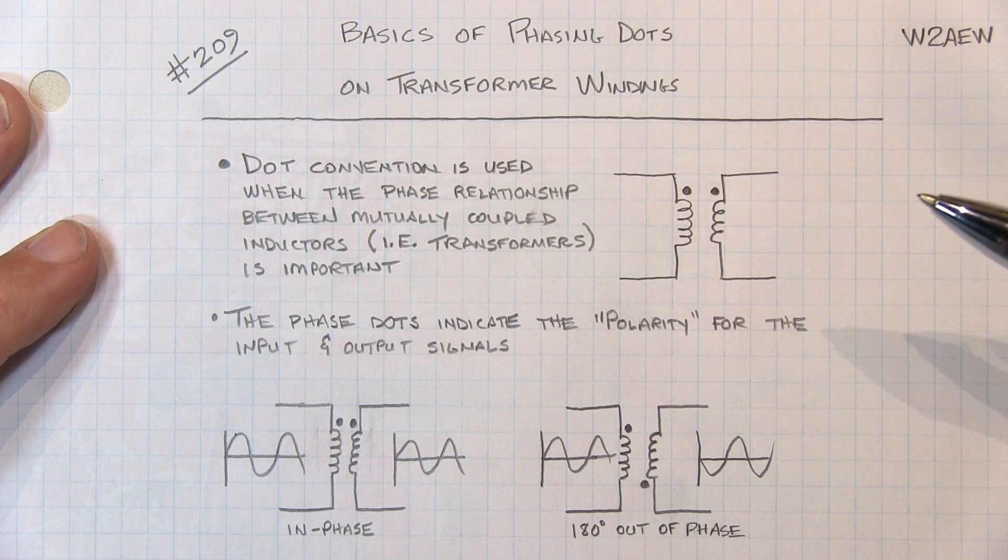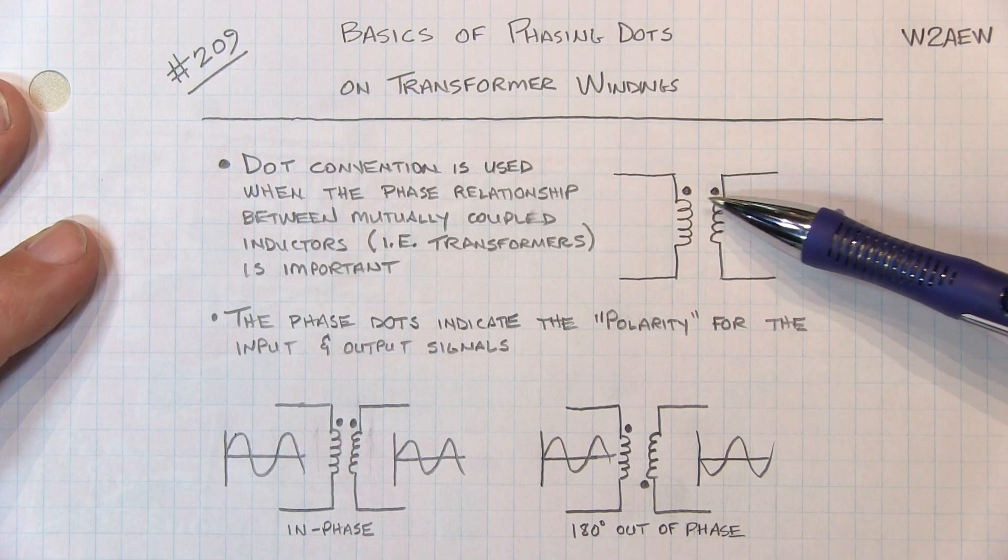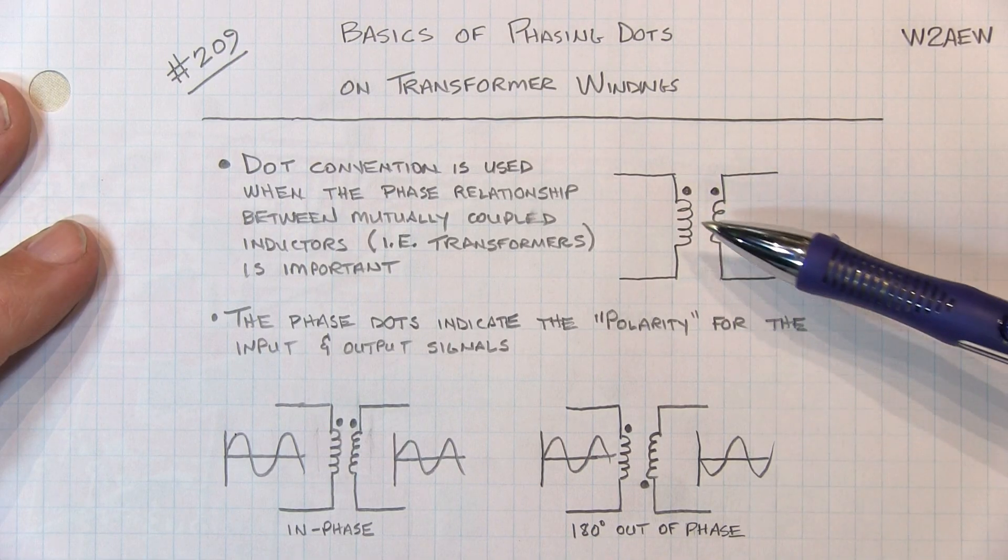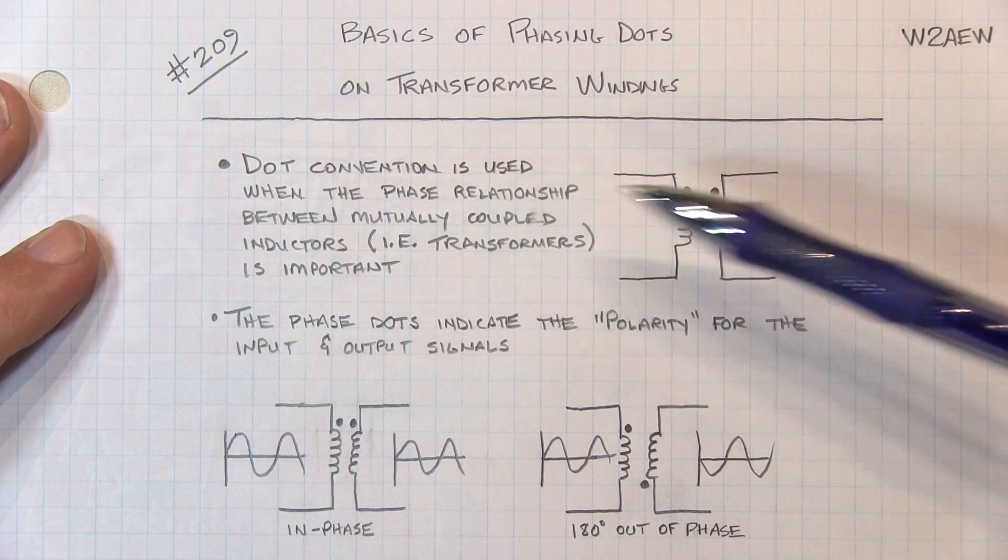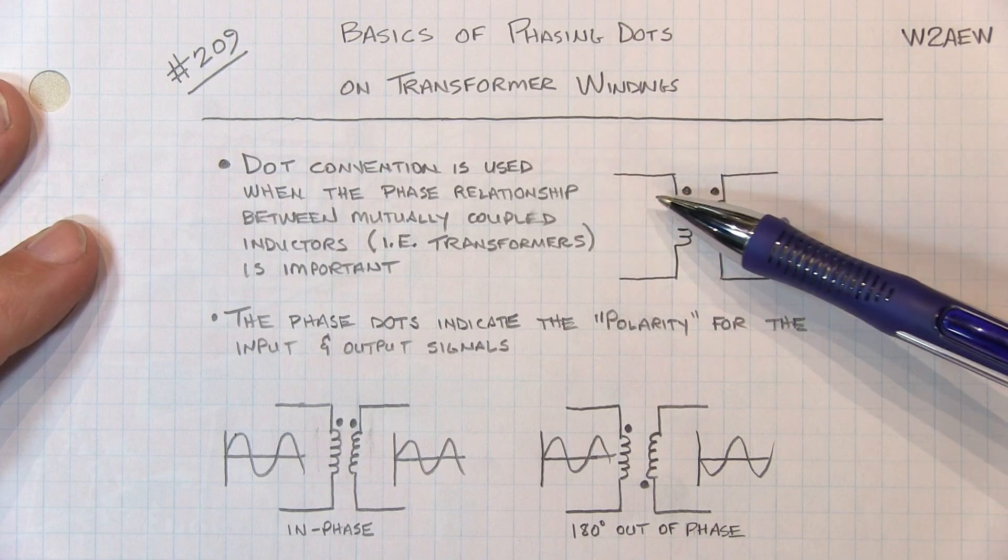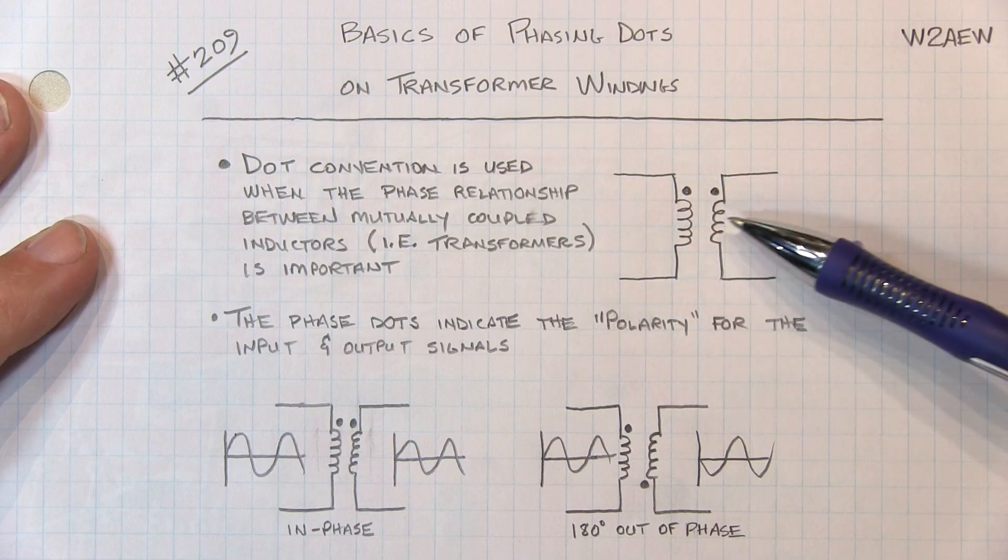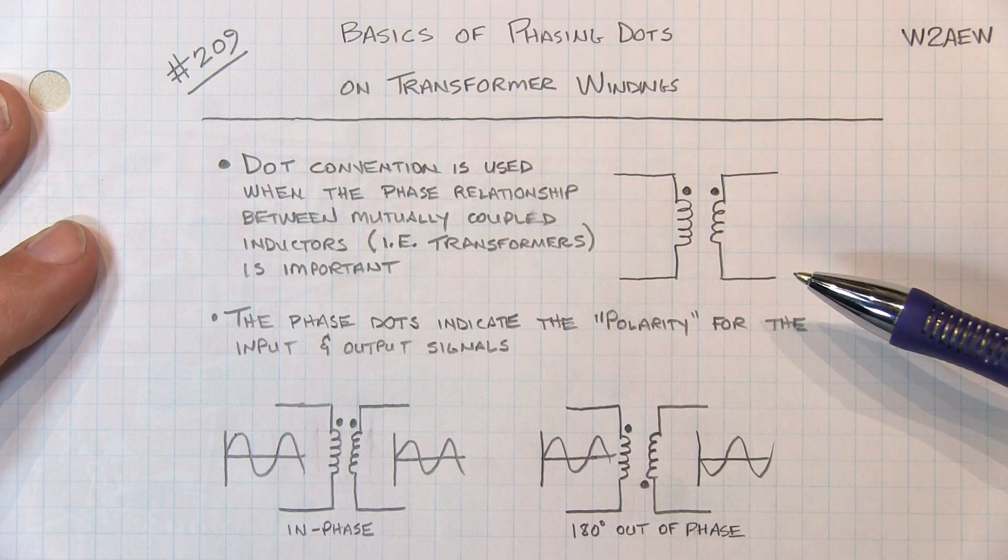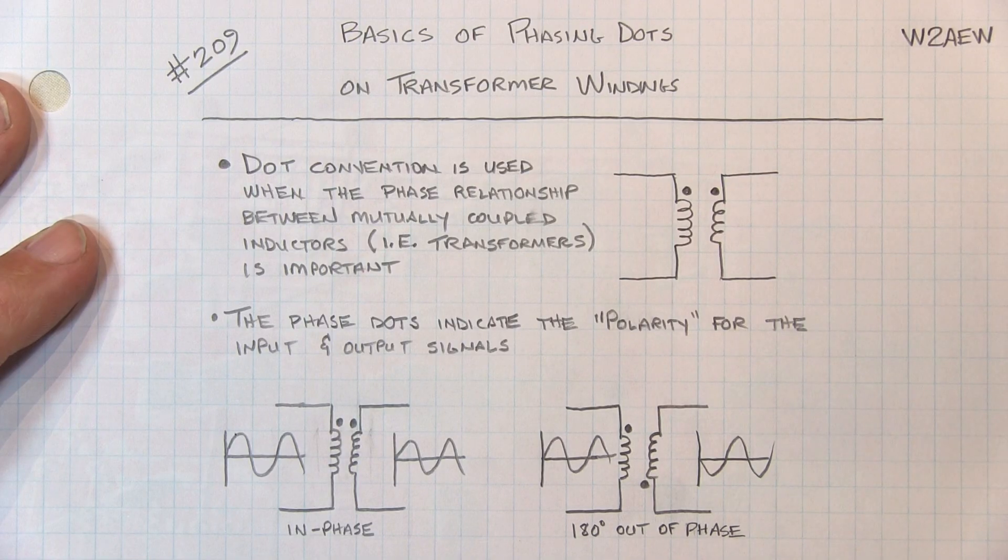When you're looking at a schematic of a circuit you might want to build, often you will see phasing dots and sometimes you won't. This dot convention is really only used when the phase relationship between these mutually coupled inductors or transformer windings is important for the circuit operation.